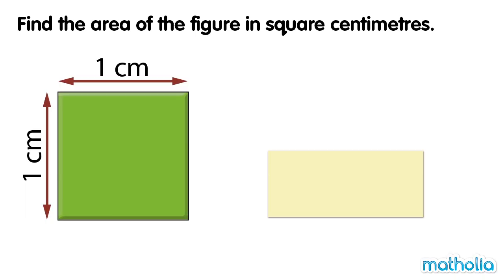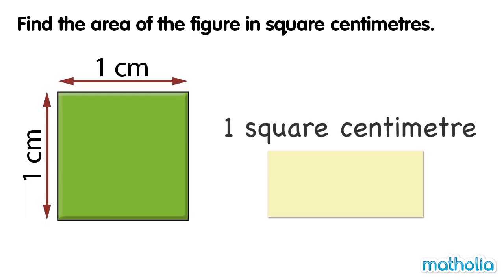Find the area of the figure in square centimetres. The square tile has a side length of one centimetre. It has an area of one square centimetre. We write one square centimetre like this.